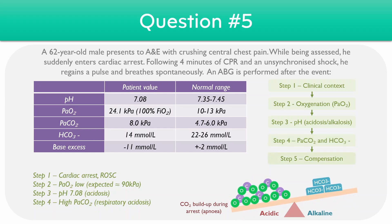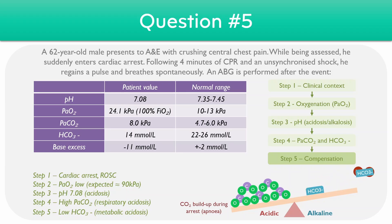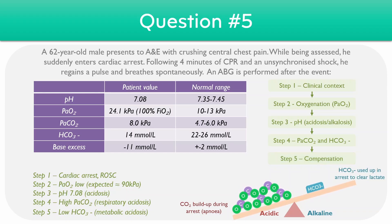Taking a look at the bicarbonate level to see if there's any compensation, the bicarbonate has actually become low — it's 14 mmol per litre — which is the opposite of what we're expecting. In other words, there's also a degree of metabolic acidosis. During the arrest, there's a buildup of lactic acid and other acid products, which consume the HCO3⁻ ions, resulting in an even lower bicarbonate level. This shifts the scale even further towards the acidic side, explaining why the acidosis is so pronounced. Overall, we have a mixed respiratory and metabolic acidosis secondary to the cardiac arrest.